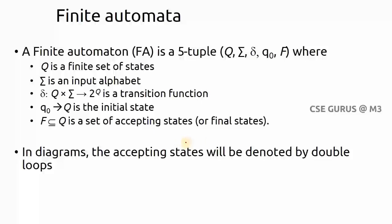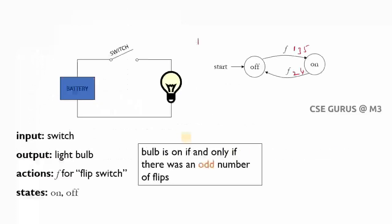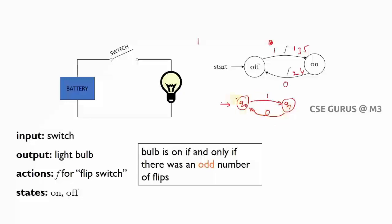We will see all those things with our example. Initially it is in a starting state — I'll represent it like this. The states are on and off; I'll take the starting state as q-naught. For q-naught, if I give one flip — let's consider flip as 1 — it will go to on mode (q1). If I give flip as 0, it will go to off mode (q-naught). Q1 is the on state; if I give 1 it goes to q1, if I give 0 it comes back to q-naught.